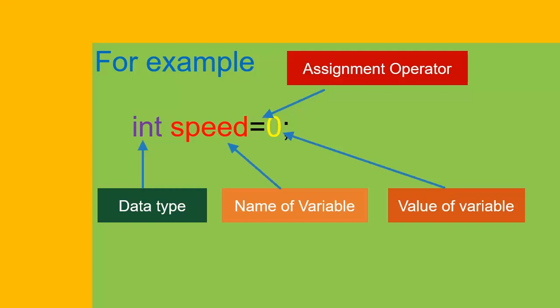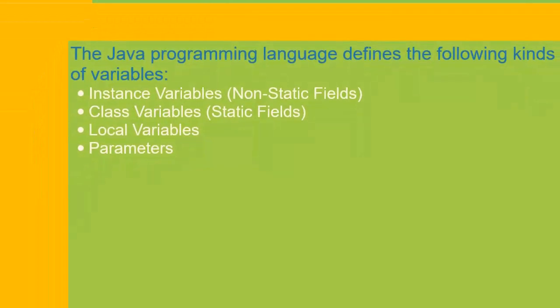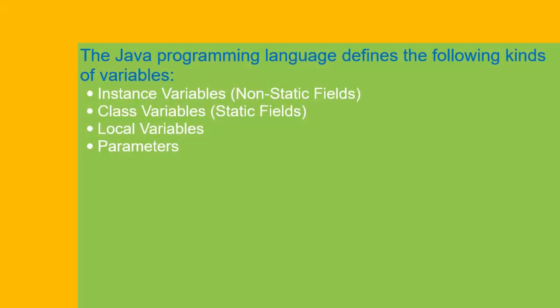Before using a variable, it must be declared. This is the example of the declaration of a variable in Java. There can be four different kinds of variables.